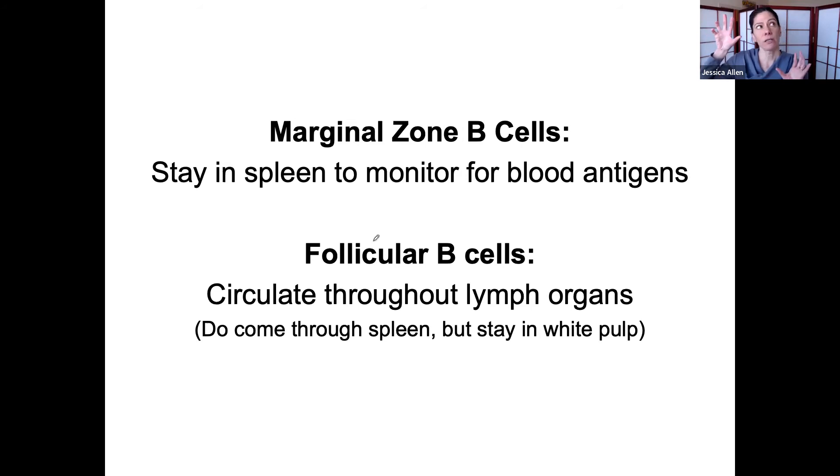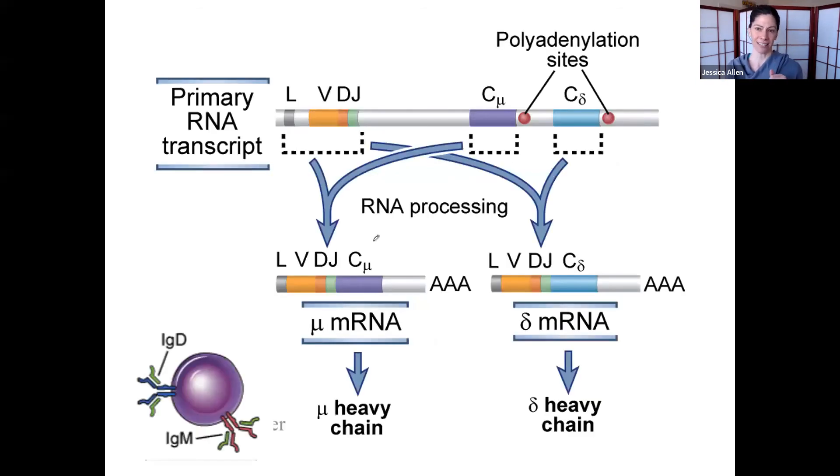We have some B-cells that are really going to hang out in the spleen. Other B-cells that are really going to hang out in the lymphoid organs. And some B-cells actually do stay in the bone marrow for a little bit. We're going to get into all of the details of all of that later. But most importantly, right now, we have a mature B-cell.